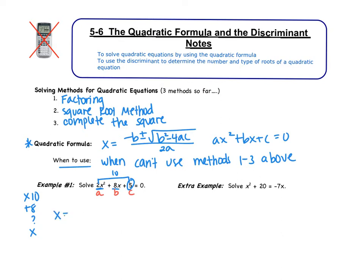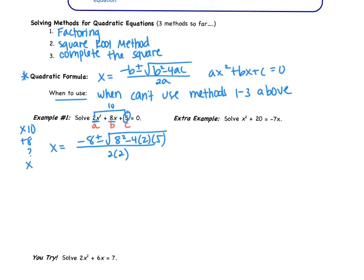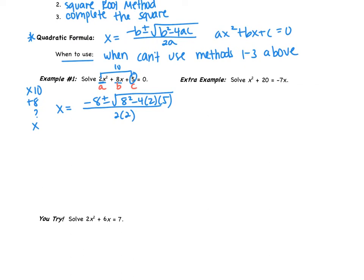So we get x equals the opposite of b plus or minus the square root of b squared minus 4ac all over 2a. Okay, got to remember our order of operations. Exponents comes first. So we get that 8 squared is 64. I'm also going to do my multiplying. 4 times 2 is 8. 8 times 5 is 40. So then I get 24.